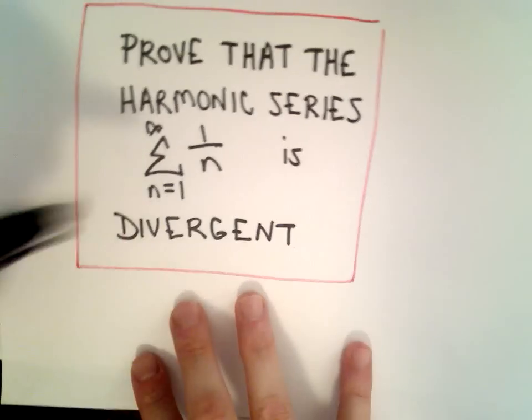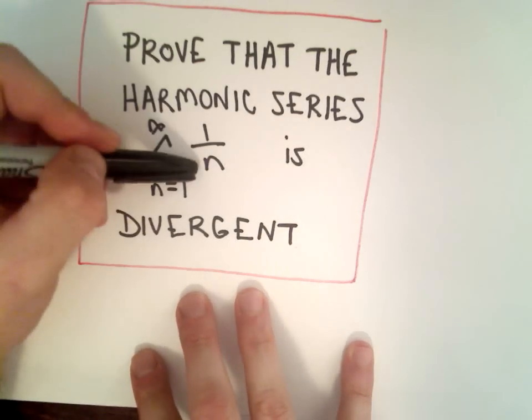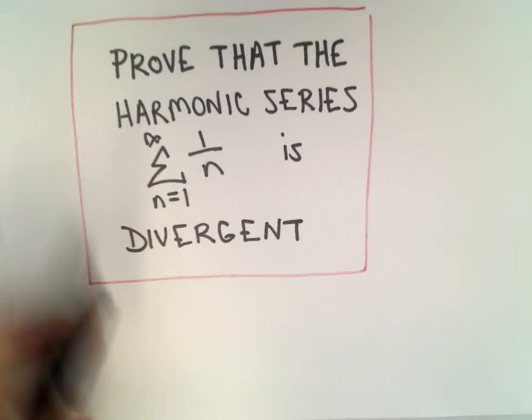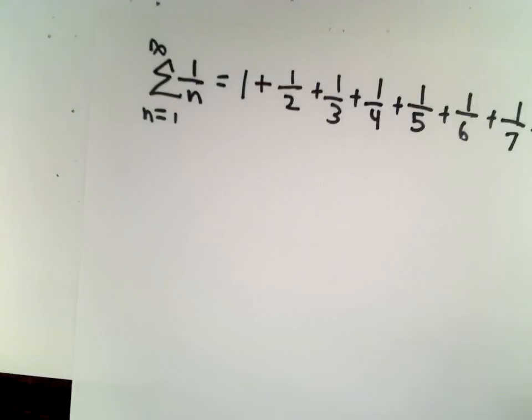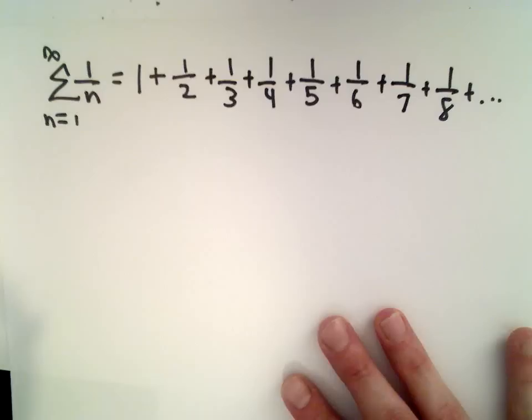Here we're going to prove that the harmonic series, which is the series from 1 to infinity of 1 over n, is divergent. I went ahead and wrote out the first eight terms here of our series.